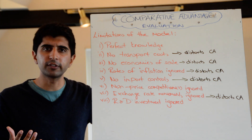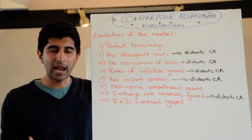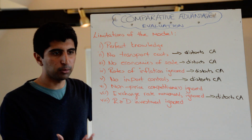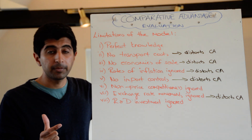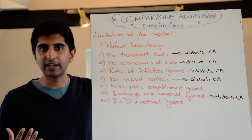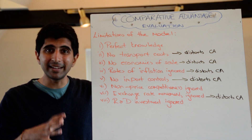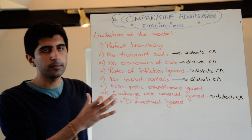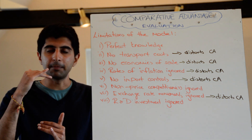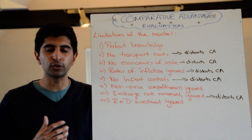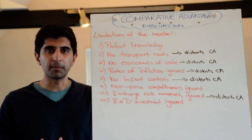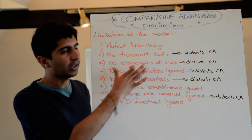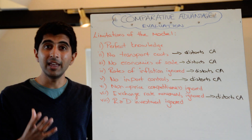The model assumes no economies of scale. But if a country does have comparative advantage and is able to supply the world market, they may benefit hugely from economies of scale, exploiting their advantage for much longer. Alternatively, a country that doesn't have a comparative advantage may be able to exploit economies of scale better, which could distort the comparative advantage gains. Whoever benefits from economies of scale can benefit from lower average costs and lower prices — an artificial advantage that doesn't come from opportunity cost. Assuming constant returns to scale all the time is quite unrealistic.